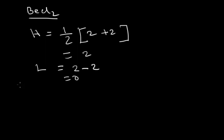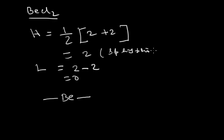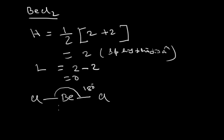That means no lone pair electron is present in beryllium dichloride. Since the number of hybridized orbitals is 2, the hybridization is SP. To minimize the repulsion between 2 hybridized orbitals, the angle between them must be 180 degrees. So the shape of BeCl₂ is linear with a bond angle of 180 degrees.